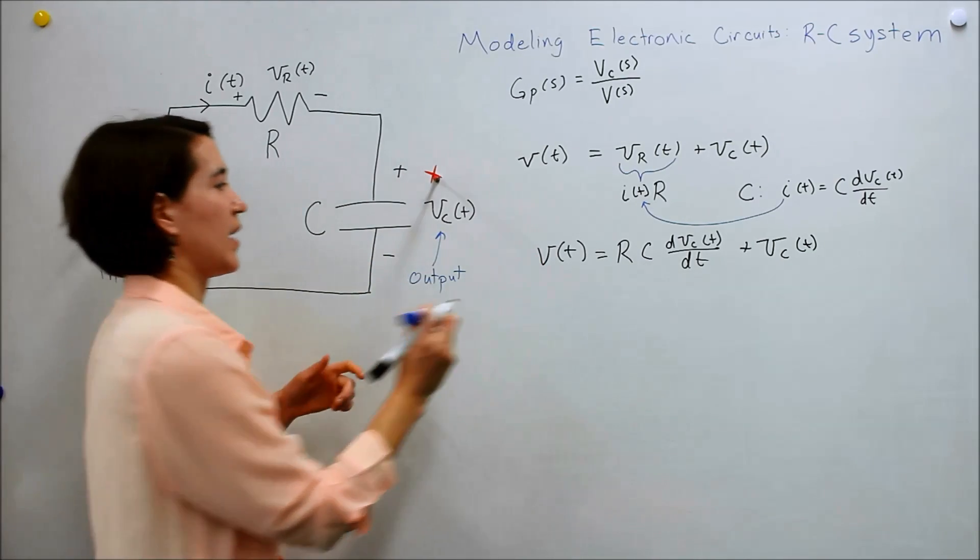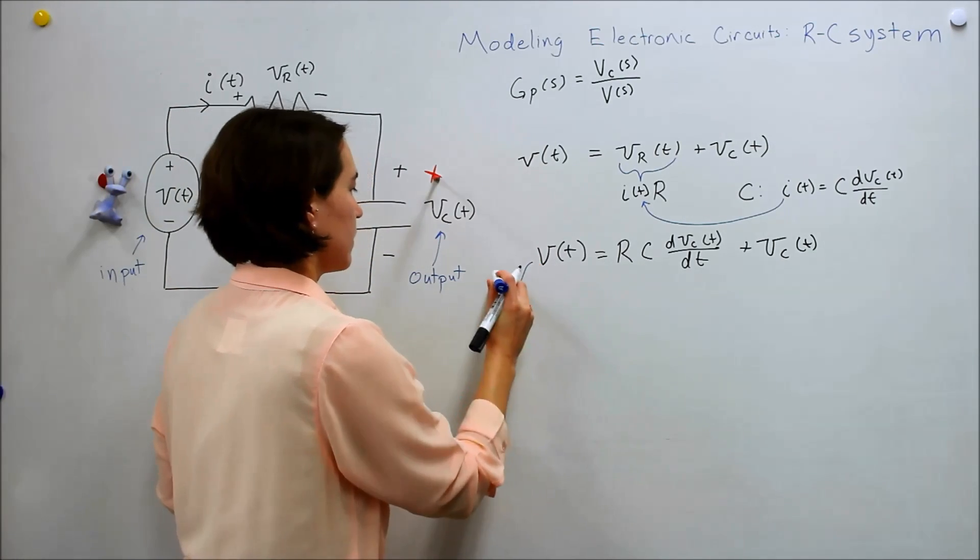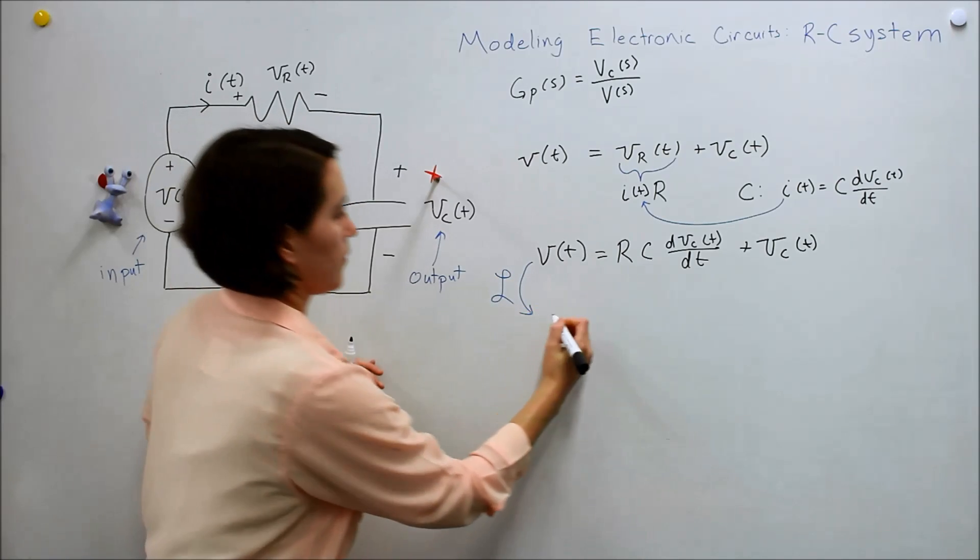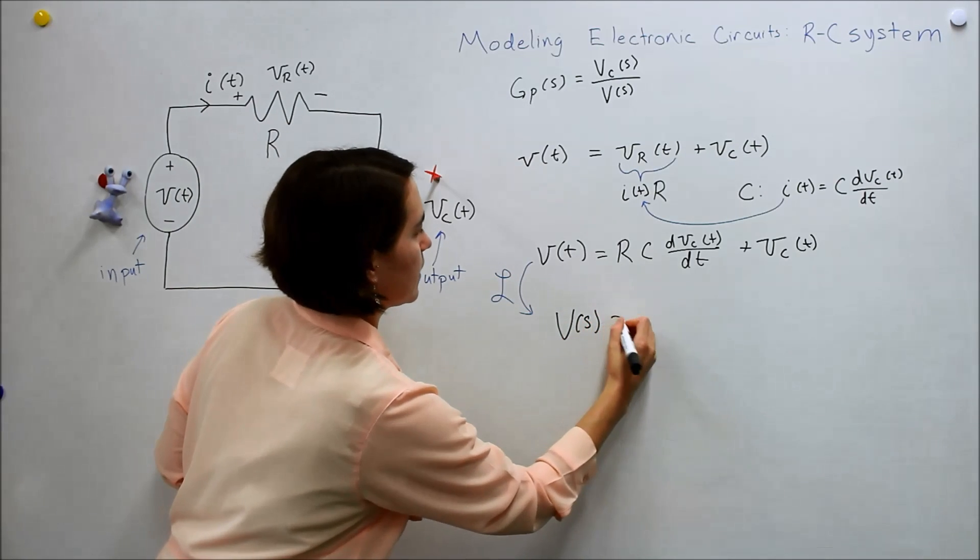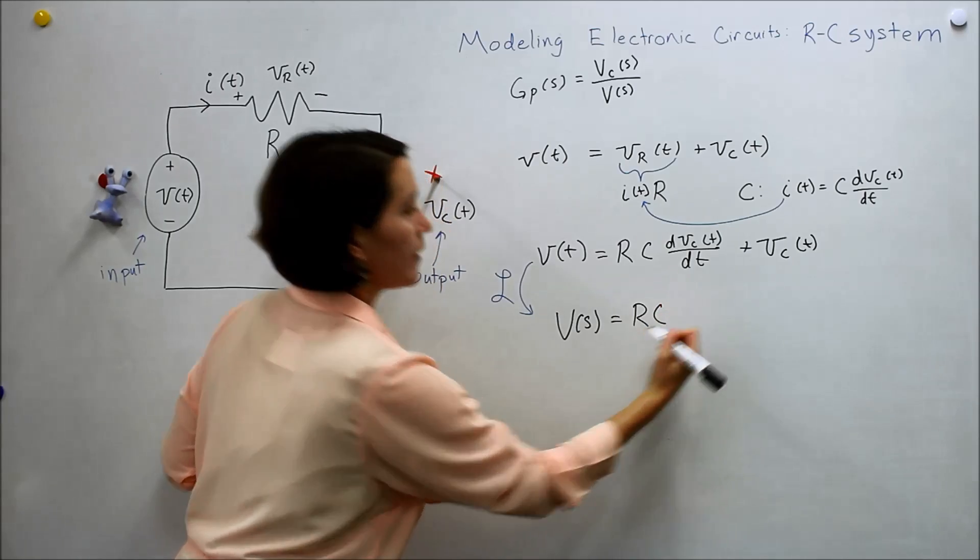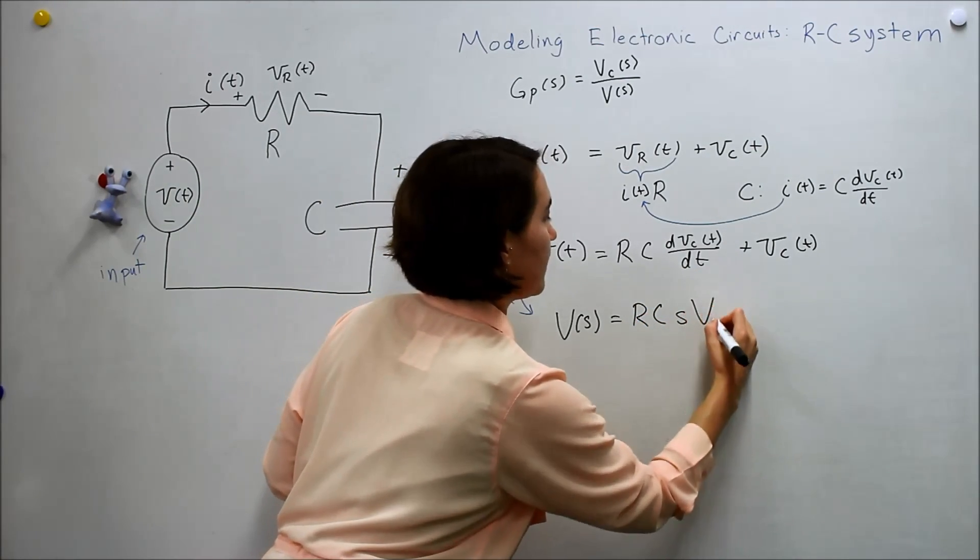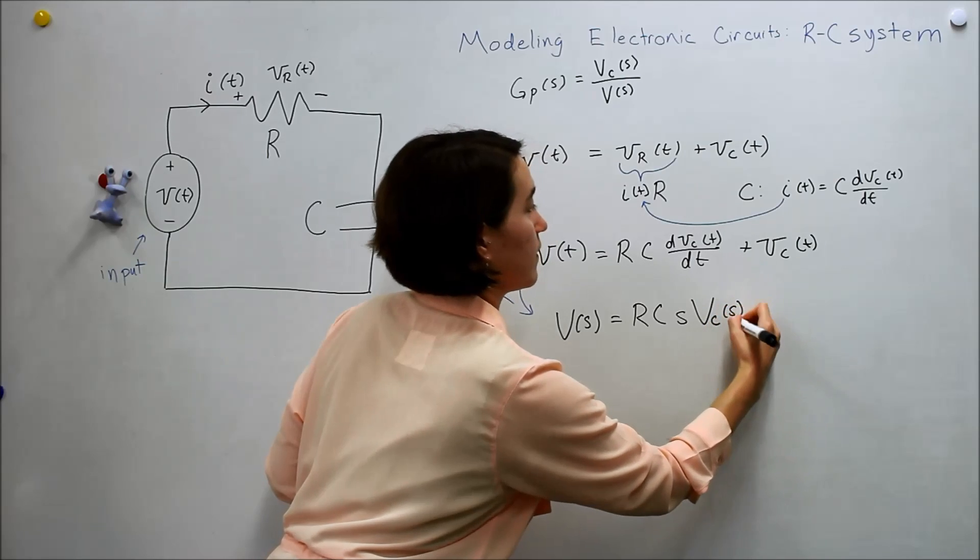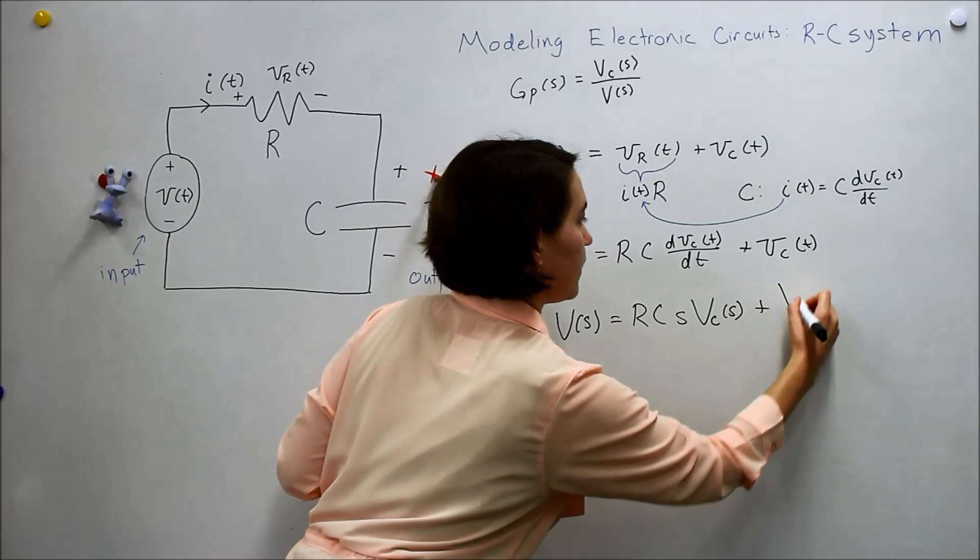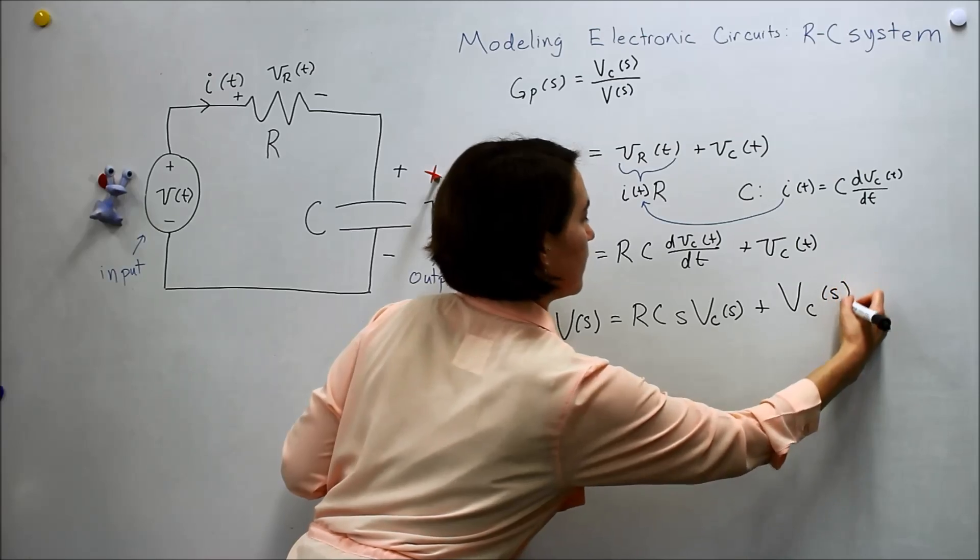The Laplace. So v becomes v(s). R c. We take the Laplace of this. We get s vc of s plus vc of s. Okay.